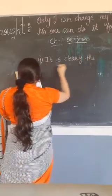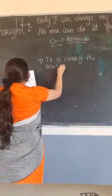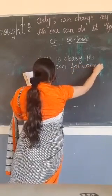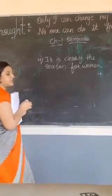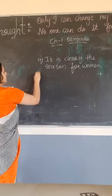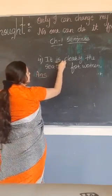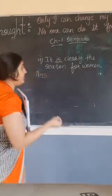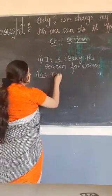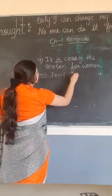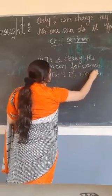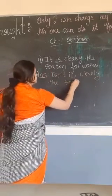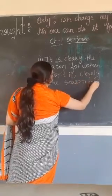Clearly the season for women. Now this we have to change into a question. Now I told you helping verb is given here — is. So is it positive? So the question tag will be negative. So how do we change this? Isn't it purely the season for women?